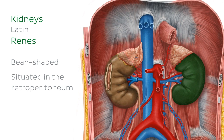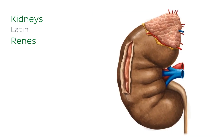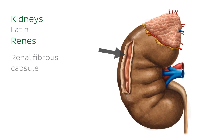Each kidney is invested in a thin connective tissue capsule known as, as you would expect, the renal fibrous capsule, which we see here. This protects the kidneys from damage or injury.